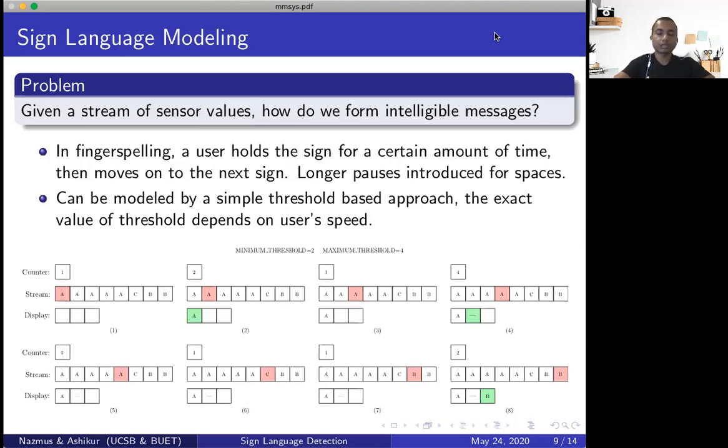So this is how it works. Our processing unit collects data from our data glove at a certain sampling rate. Once it collects the data, it then tries to predict what character it is. However, as soon as it detects a character or letter, it does not really show it in the display. Rather, it waits to observe the same letter a certain number of time. And we say that this number is equal to a value minimum threshold. In this example, the minimum threshold value is set to 2.